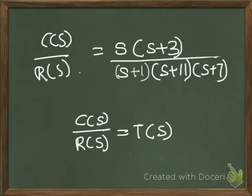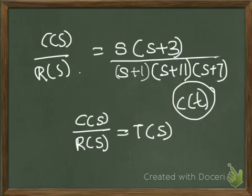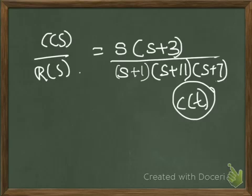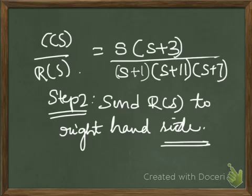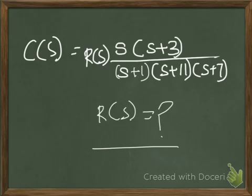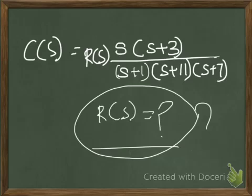Any time response is actually c(t) — c(t) is your time response. Now think of ways to obtain c(t) from the equation C(s)/R(s) = T(s). The first step is to send R(s) to the right-hand side, leaving you with C(s) = R(s) · s(s+3) / [(s+1)(s+11)(s+7)]. The next key question is: what does R(s) equal?